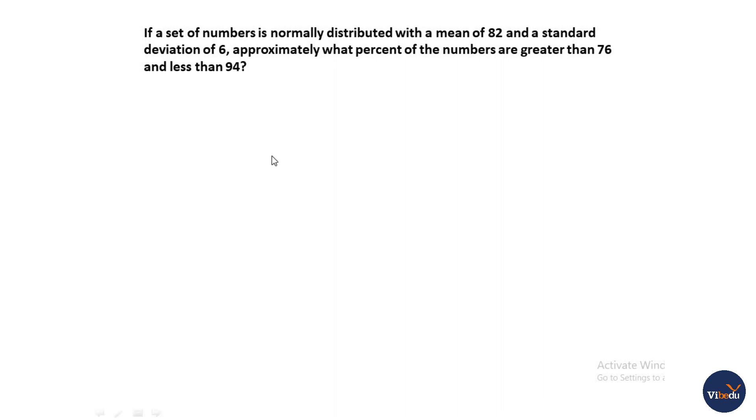So in the question, let's start with a set of numbers. The numbers are normally distributed with a mean of 82, standard deviation is 6. What percentage is greater than 76 and less than 94? Option A is 27%, B is 68%, C is 73%, D is 82%, and E is 95%.